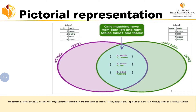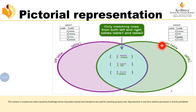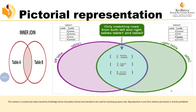Here is a pictorial representation of inner join. In table 1 we have column 1 and column 2, and in table 2 we have column 3 and column 4. Column 1 has values 1, 2, 3, 4 and table 2 has values 2, 3, 4, 5. Whatever is common for both — 2, 3, and 4 — is present on both sides, so that is what comes under inner join. Only the matching rows from both tables will appear in the result.